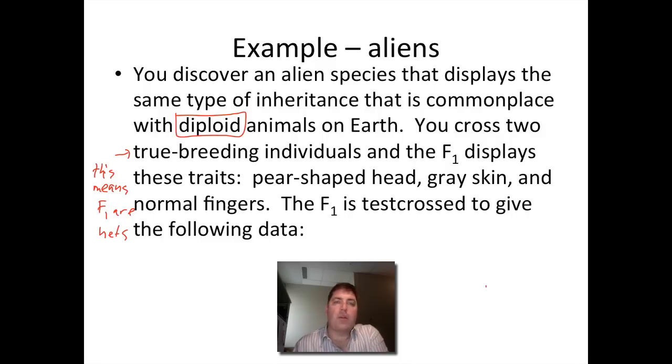We are going to start with true breeding individuals who are diploid, so that means that the F1s that we generate from these are going to be heterozygous, and we will use a test cross so that we can see the kind of chromosomes that are provided from that heterozygote.